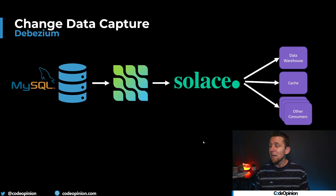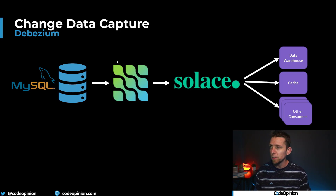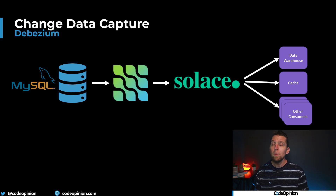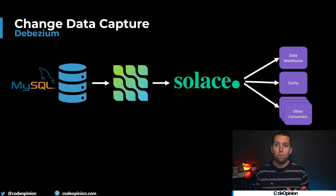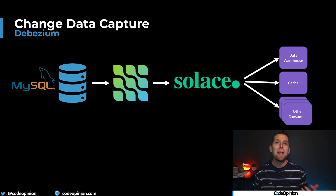With CDC, we can capture data changes in real-time and distribute them to other parts of our system. In terms of tooling, as my example here shows, I have MySQL and a really popular CDC platform tool called Debezium, which is the icon here. It gets those data changes and publishes them as events to our message broker, which is Solace. We're publishing to topics and using publish-subscribe. We could have one subscriber, zero subscribers, or many different subscribers — for example, a data warehouse consumer or cache invalidation — and many other consumers.